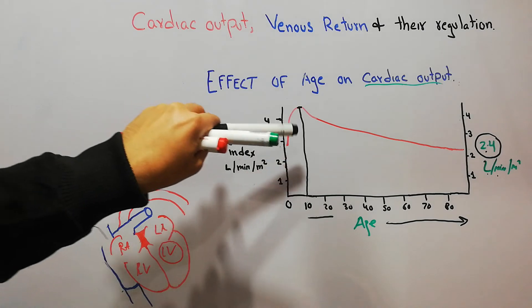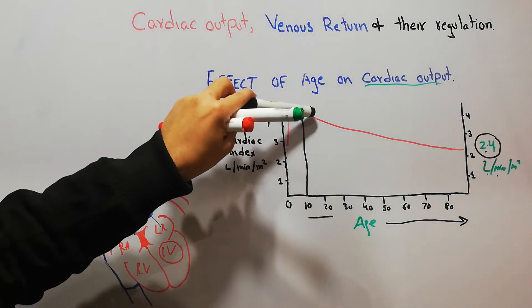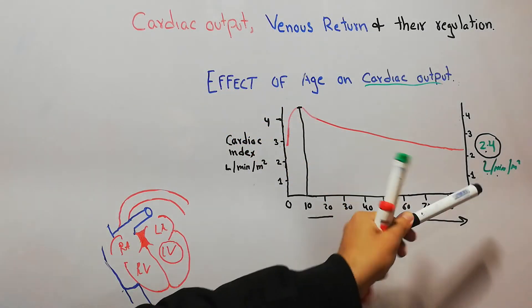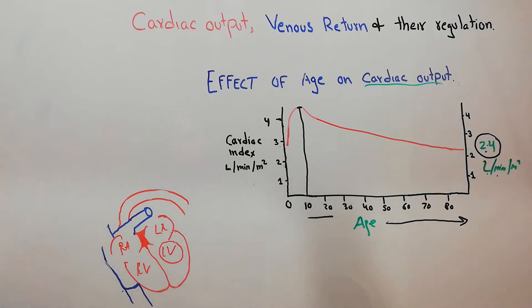After the age of 10 years, the cardiac index starts declining, and by the age of 80 it reaches around 2.4 liters per minute per meter square.